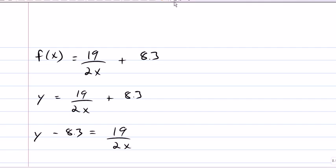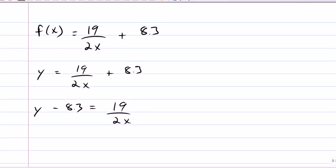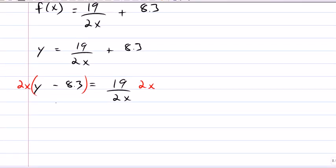I'm gonna multiply both sides by 2X. So, I've got 2X times Y minus 8.3 equals 19.